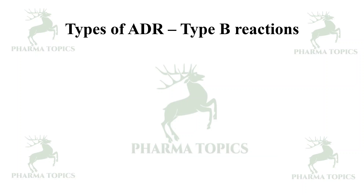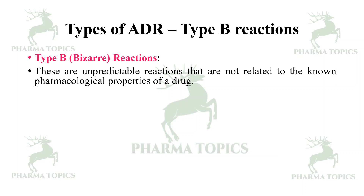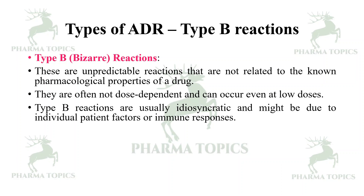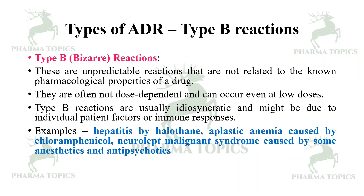Next is Type B reactions. Type B, or bizarre reactions, are unpredictable reactions not related to the known pharmacological properties of the drug. They are often not dose dependent and can occur even at low doses. Type B reactions are usually idiosyncratic and may be due to individual patient factors or immune responses. Examples include hepatitis by halothane, aplastic anemia caused by chloramphenicol, and neuroleptic malignant syndrome caused by some anesthetics and antipsychotics. Such reactions are unrelated to dose.